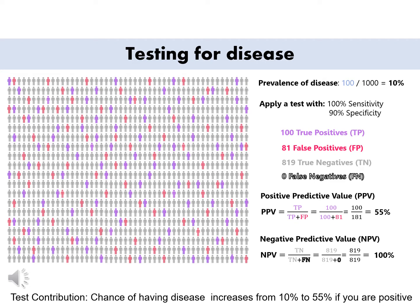Applying the equation for the positive predictive value, the result in this scenario is 55%, which means that if we test any of these thousand people and the test is positive, their chances of having the disease are 55%. The negative predictive value in this scenario is 100%, meaning if you are negative, your chances of having the disease are zero.